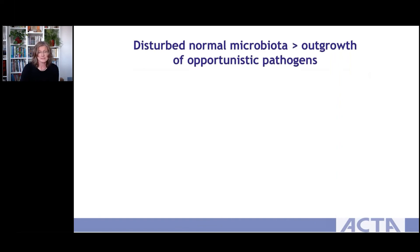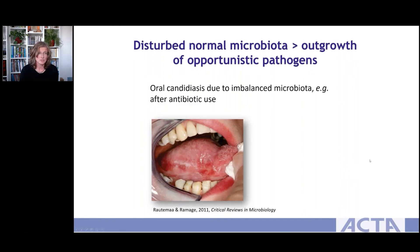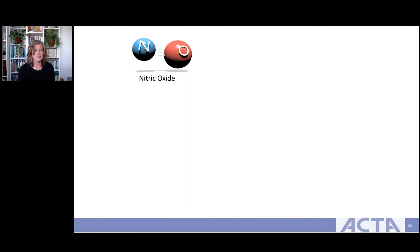Oral microbes also protect us from intruders by keeping the niche occupied so other microbes cannot settle there. But when they are killed, the niche becomes available. An example is the outgrowth of the opportunistic pathogen Candida albicans — a painful and debilitating condition causing white patches on your tongue — which can grow out of proportion when bacteria are killed by antibiotics.